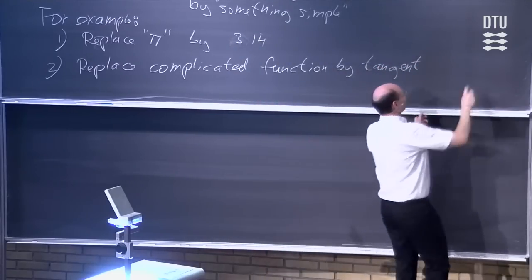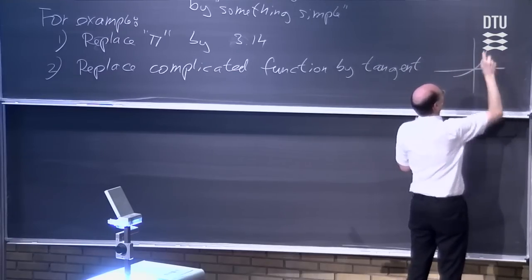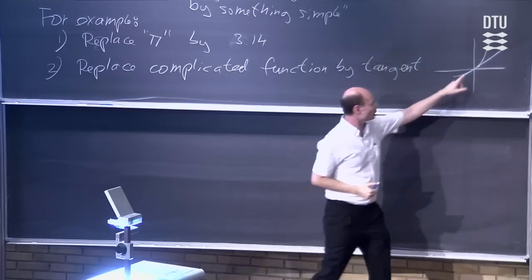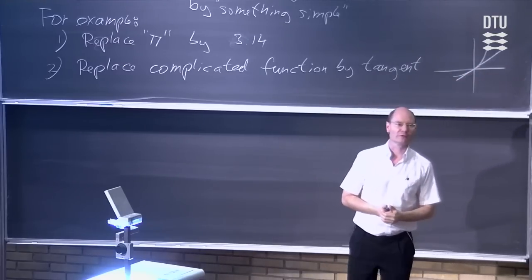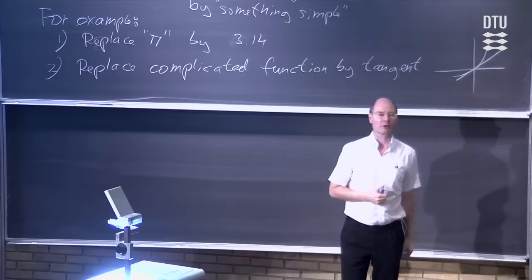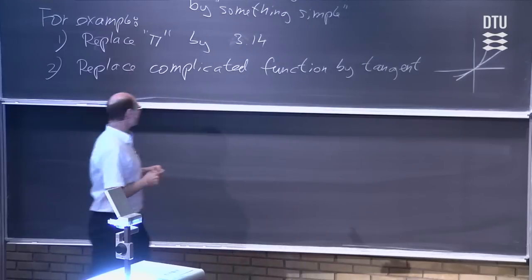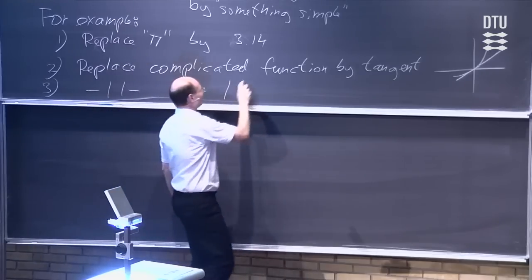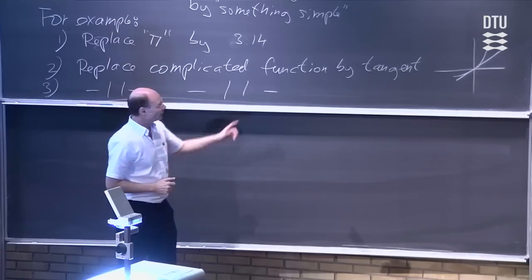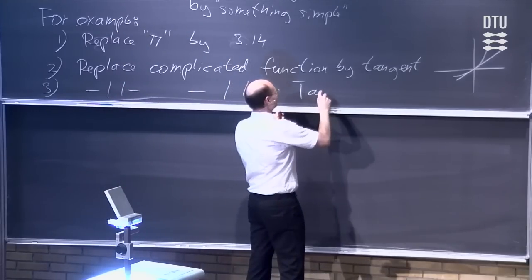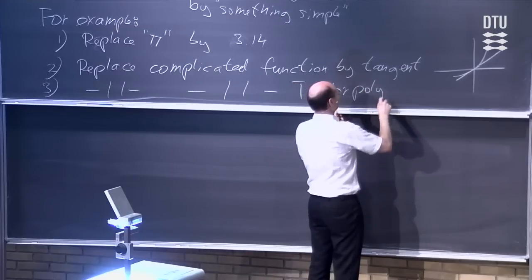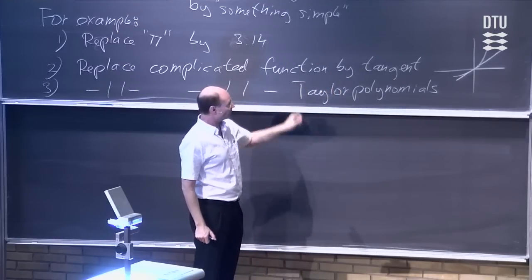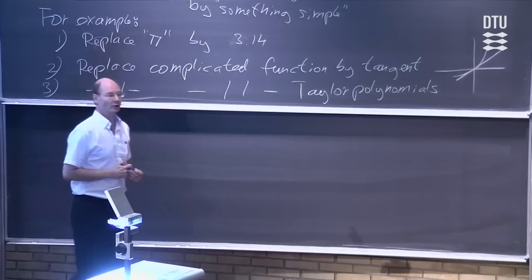Sometimes the tangent approximation goes very well, sometimes it does not. If you have a function and look at the tangent at a point, you get a line. Close to that point the tangent gives a good approximation, but when you move away, the approximation gets worse in general. Then at university you wanted to do something better: you replaced complicated functions not just by tangents but by Taylor polynomials. The first-order Taylor polynomial is exactly the tangent — we are just generalizing to get something better.